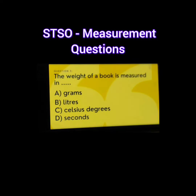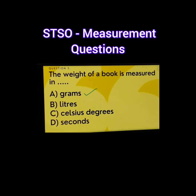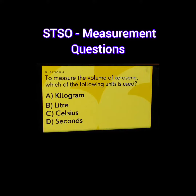Question number 3. The weight of a book is measured in dash. The options are A. Grams, B. Liters, C. Celsius degrees, D. Seconds. The correct answer is A. Grams.